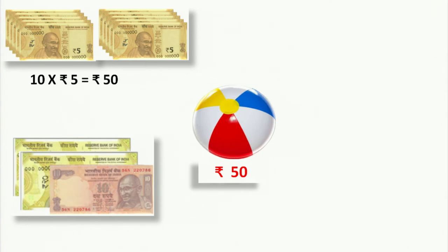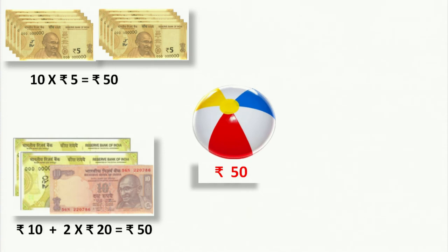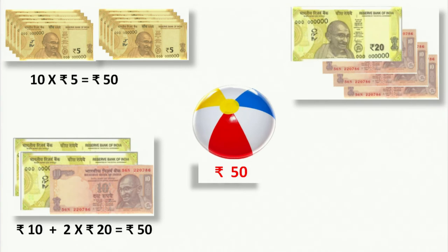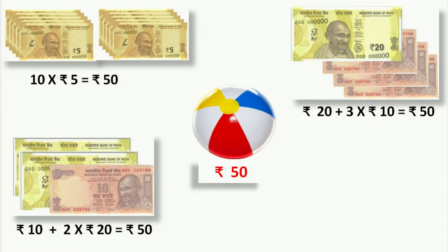I have one more suggestion: if I pay 2 twenty-rupee notes and 1 ten-rupee note, that also makes 50. Because 1 ten-rupee note is 10, and 2 times 20 is 40 — so 10 plus 40 is 50. One more way: you can use 1 twenty-rupee note and 3 ten-rupee notes. 3 times 10 is 30, and 30 plus 20 is 50. You can also pay with 5 ten-rupee notes: 5 times 10 equals 50. So there are numerous ways to pay the amount.